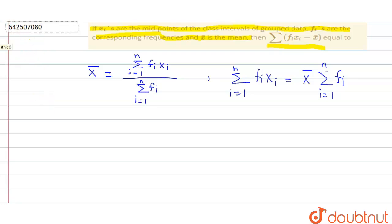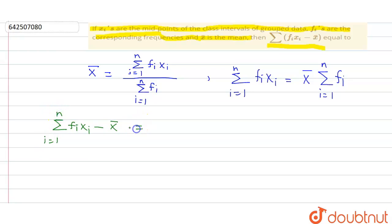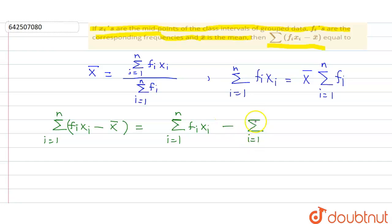We have to find the value of the summation of fi·(xi − x̄) for i = 1 to n. Separating these terms, we get: summation of fi·xi (i = 1 to n) minus summation of fi·x̄ (i = 1 to n).